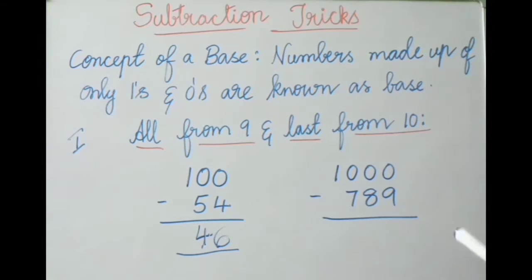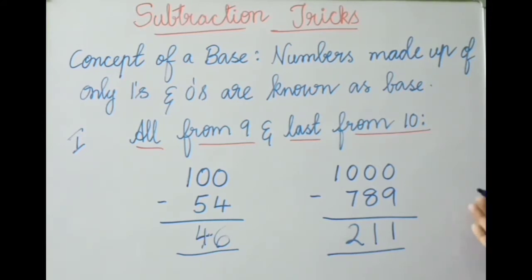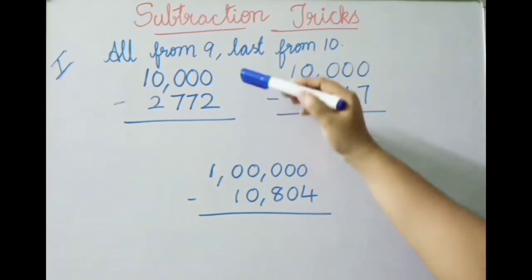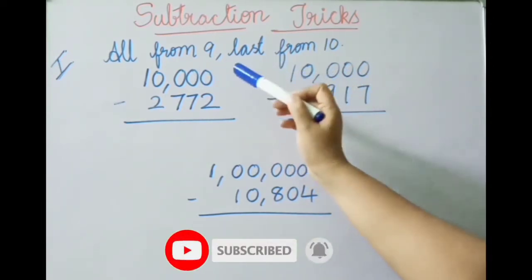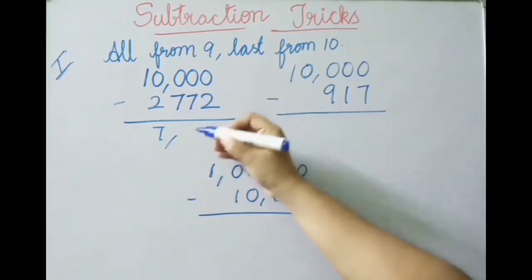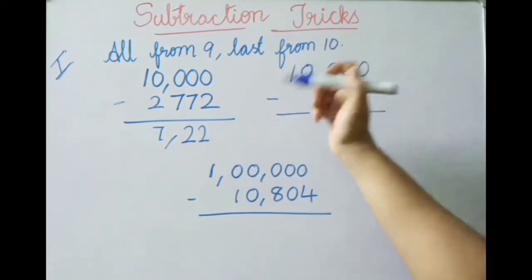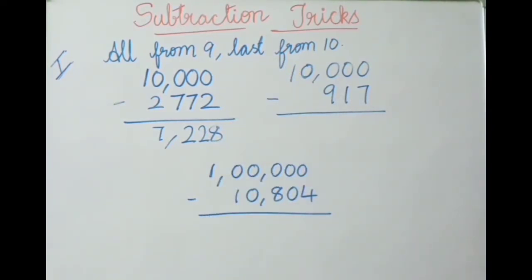See the next example: ten thousand minus two thousand seven hundred seventy-two. We follow the rule — all from nine and last from ten: nine minus two is seven, nine minus seven is two, nine minus seven is two, and the last number from ten: ten minus two is eight. So the answer is seven thousand two hundred twenty-eight.